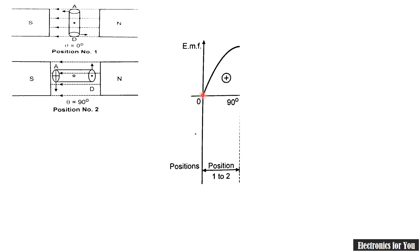If this coil is rotated in anti-clockwise direction, moving from position number 1 to position number 2, that is from 0 degrees to 90 degrees, it will cut some magnetic lines of forces and therefore some EMF is generated. In this case the EMF is maximum because sin 90 is equal to 1, and therefore maximum EMF is generated from position 1 to position 2.